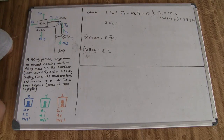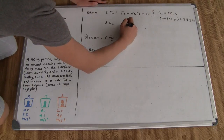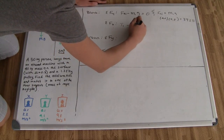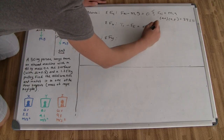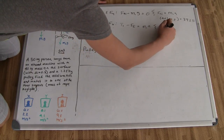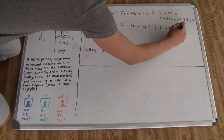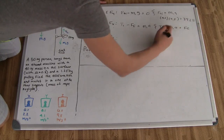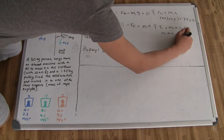Next, we consider the summation of forces on the block in the x-direction. The tension of the rope holding the block minus the force of friction equals the mass times acceleration of the block. Therefore, tension equals mass times acceleration plus the force of friction, or m₁a plus μFₙ.